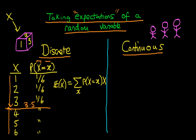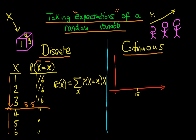Now let's consider the expectation of a continuous random variable. An example of a continuous random variable is the height of a randomly selected individual within a population. We might expect the frequency distribution in this case to be normally distributed around some average height — perhaps 150 centimeters. So the PDF might look like a distribution centered around 150.